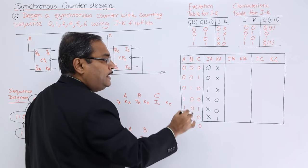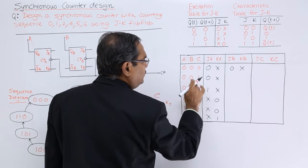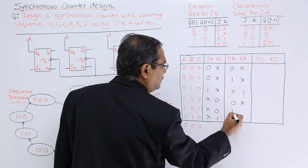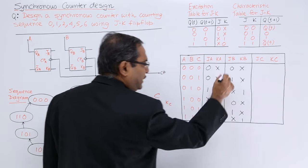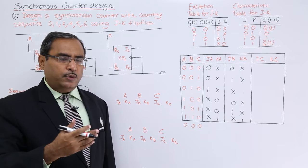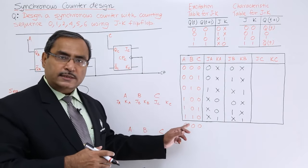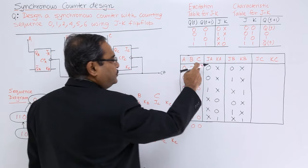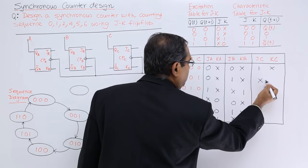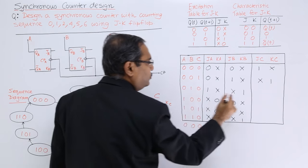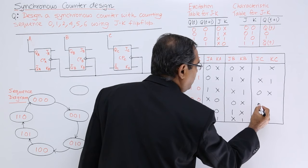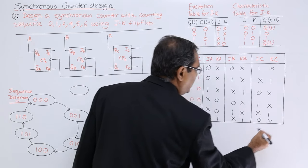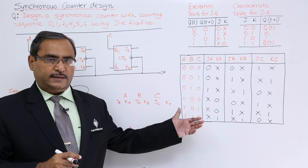For JB and KB, looking at the B column: 0→0 gives 0x, 0→1 gives 1x, 1→0 gives x1, 0→0 gives 0x, 0→1 gives 1x, and 1→0 gives x1. For JC and KC, looking at the C column: 0→1 gives 1x, 1→0 gives x1, then 0→0 gives 0x, 0→1 gives 1x, 1→0 gives x1, and 0→0 gives 0x. All 6 J and K columns are now filled.